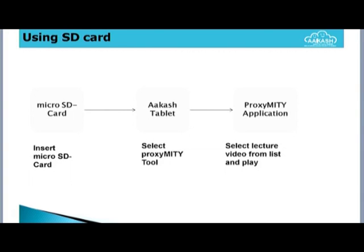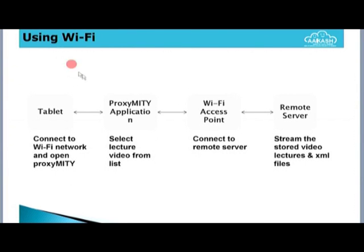This is a simple diagrammatic representation using SD card: first insert the SD card inside the Akash tablet, open the proximity tool, and you will find the video list rendered from the external SD card. The next diagram shows using Wi-Fi. With Wi-Fi, we have more elements in the picture: the Akash tablet loaded with the proximity application connects to the Wi-Fi access point, which further connects to the remote server. This access point can be anywhere inside a classroom, hostel, or department, and the proximity application will stream data from the server via the Wi-Fi access point.